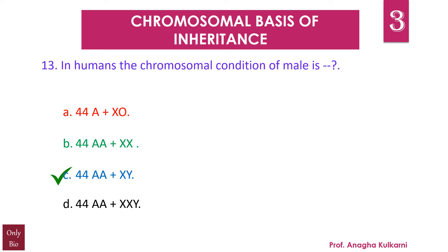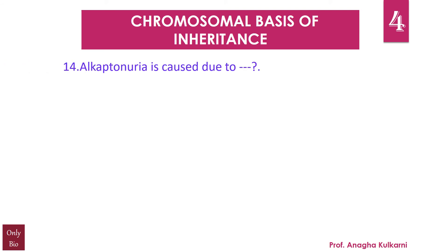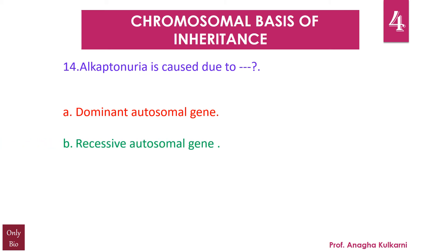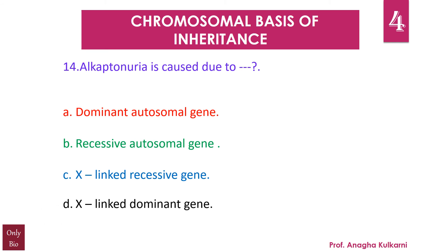Question number 14: Alkaptonuria is caused due to — A) dominant autosomal gene, B) recessive autosomal gene, C) X-linked recessive gene, D) X-linked dominant gene. The correct answer is B — recessive autosomal gene. So alkaptonuria is caused due to a recessive autosomal gene.